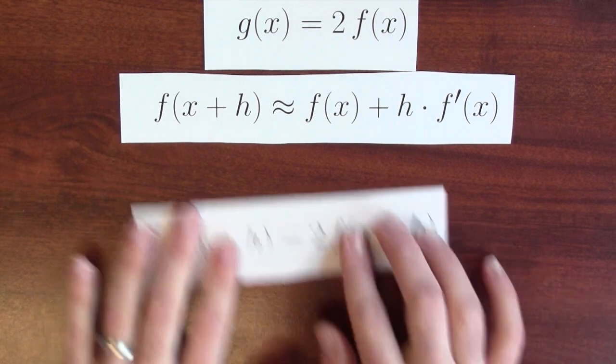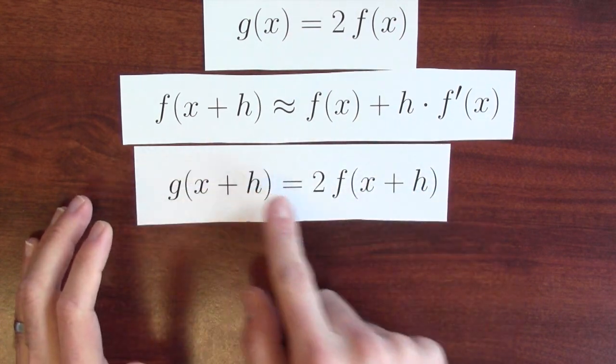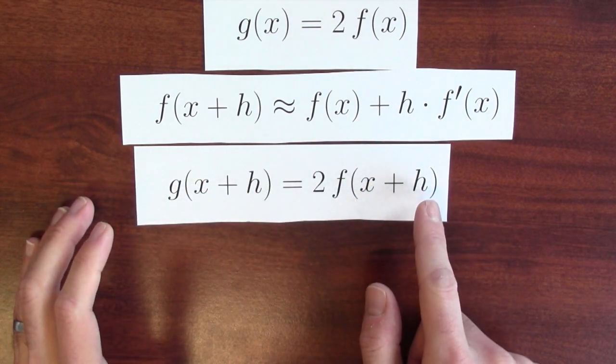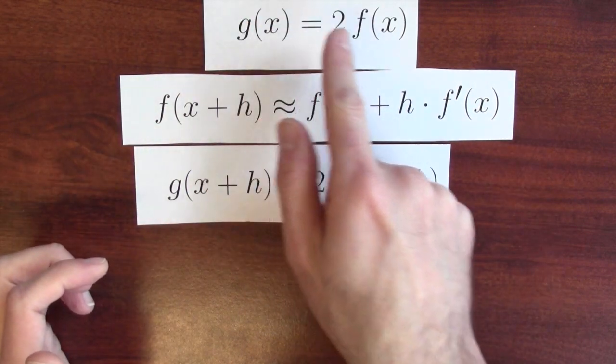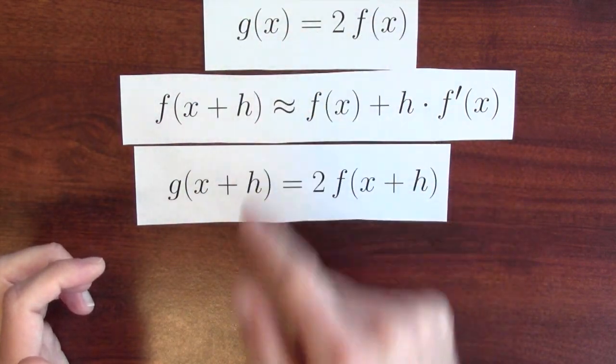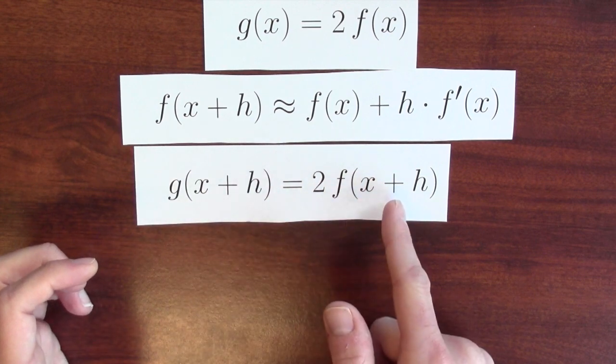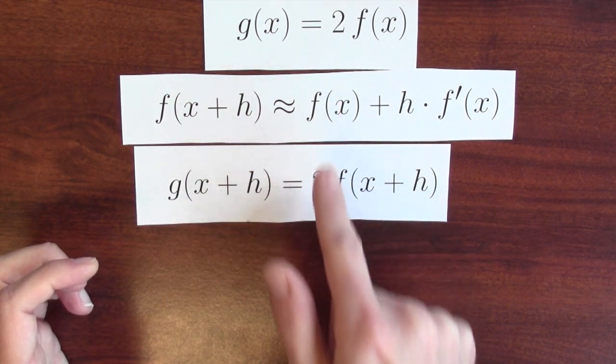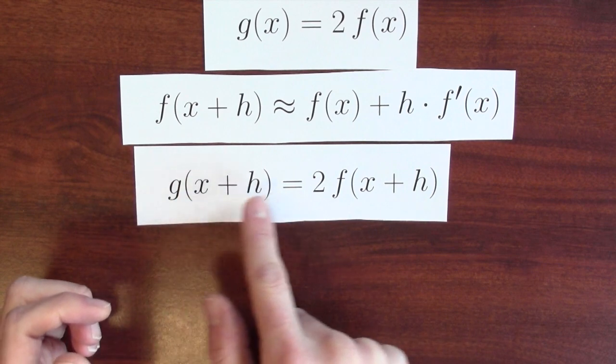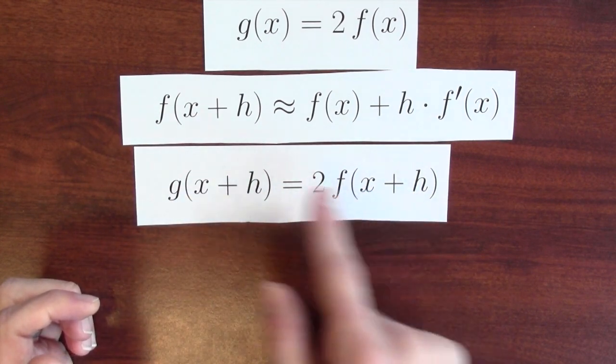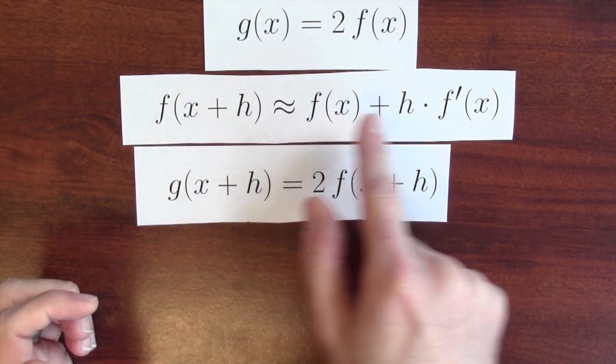Now I know one other thing. I know that g of x plus h is twice f of x plus h just because g is twice f for any input value x. So in particular that's true when the input is x plus h. These two statements are connected. g of x plus h is twice f of x plus h and f of x plus h is approximately this.